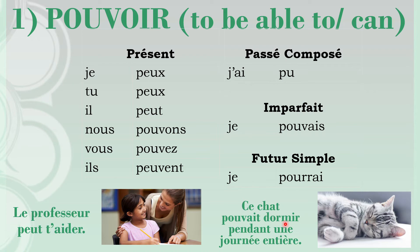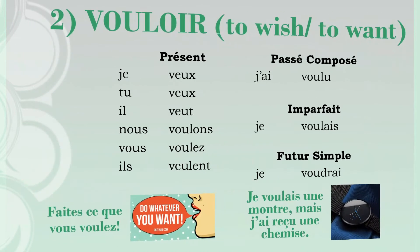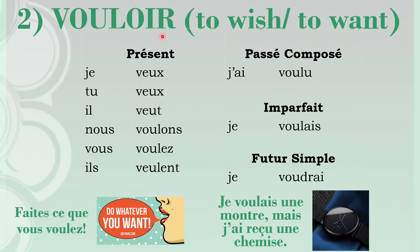Next we come to the second modal verb, which is vouloir. Vouloir means 'to wish' or 'to want' something. In the present tense: je veux, tu veux, il veut, nous voulons, vous voulez, ils veulent. You will notice some resemblance to pouvoir — if you can identify that resemblance, it will become very easy to learn both verbs together, especially in the present tense.